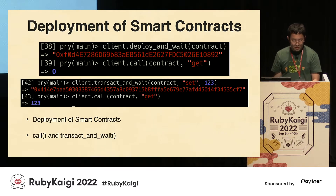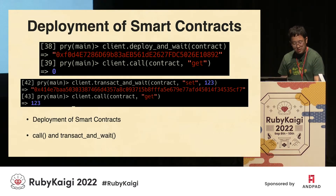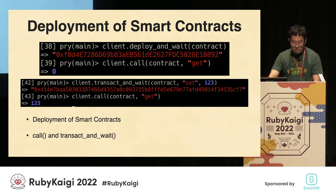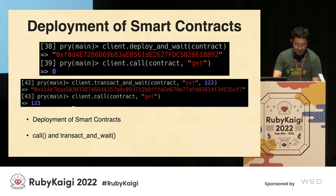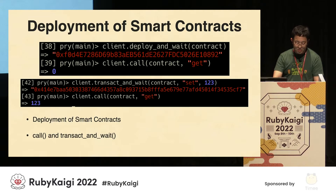The call method in eth.rb is used to call smart contracts — for example, the 'get' function. In this way, a process that does not require a transaction and does not write anything to the blockchain can be called using the call method. The transact_and_wait method executes a transaction on the blockchain. Use this method when you want to execute a function that writes information to the blockchain.